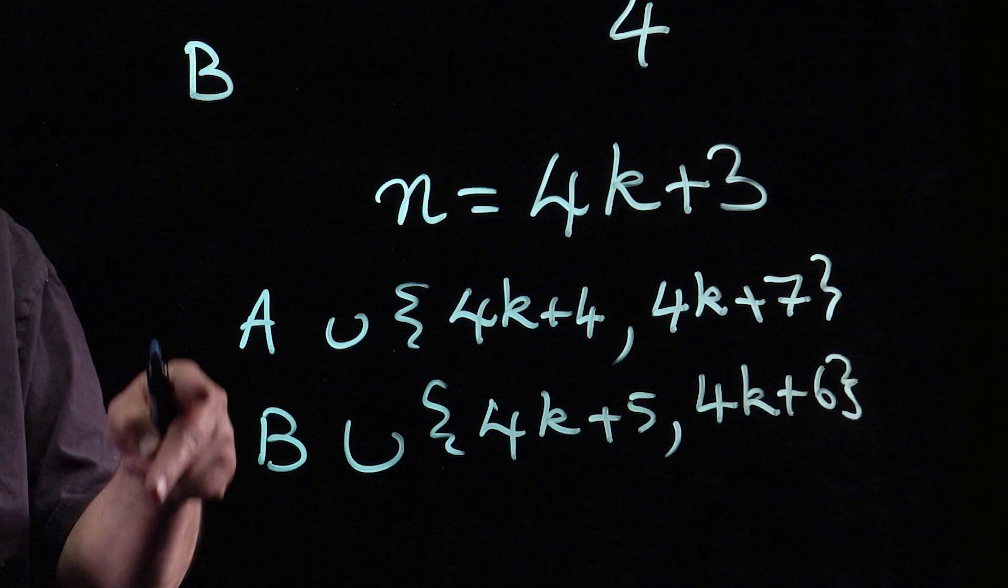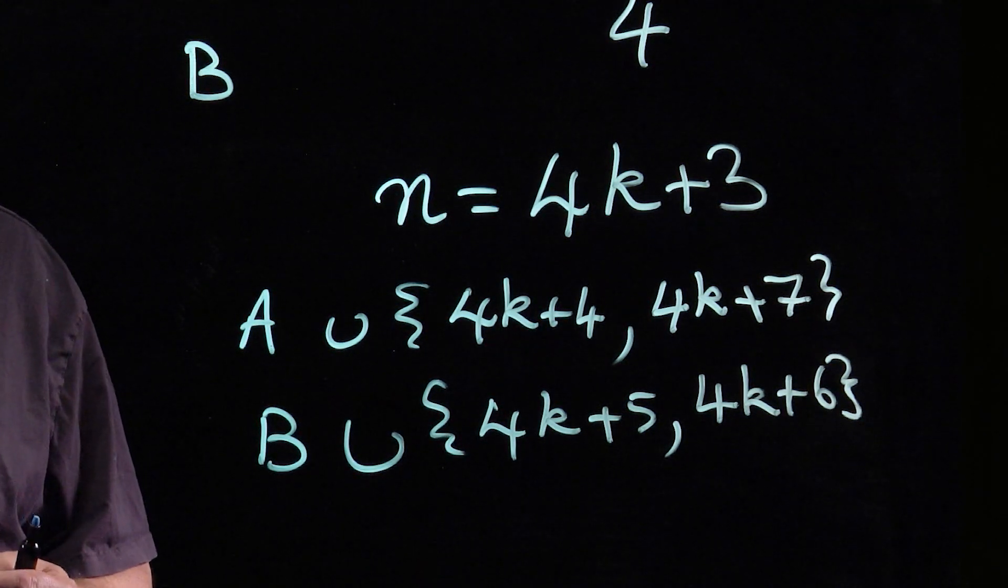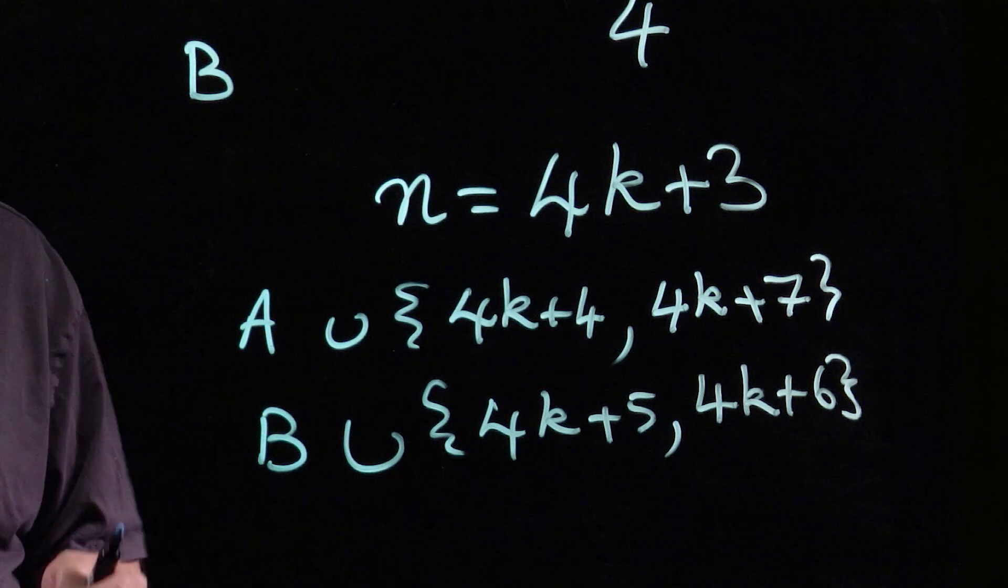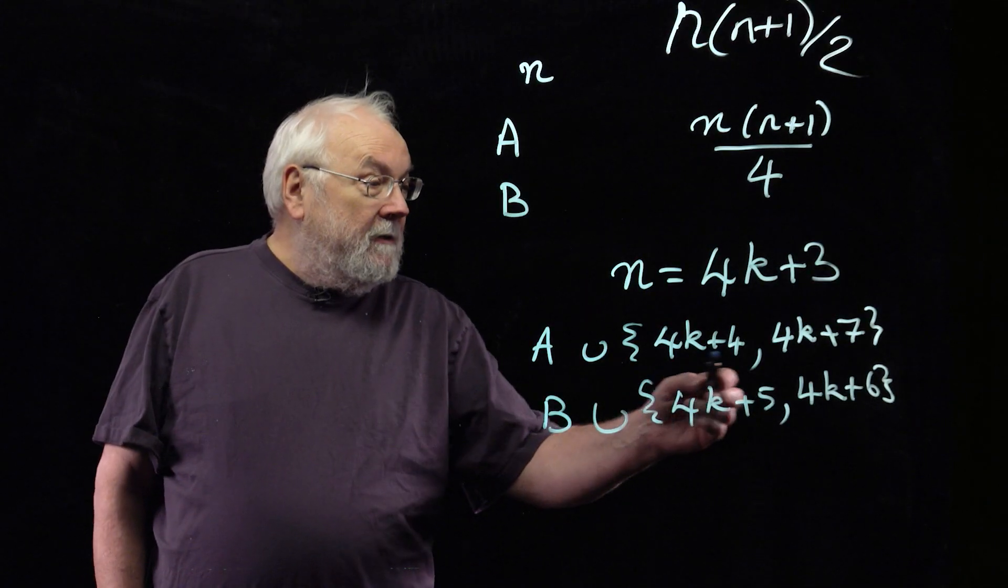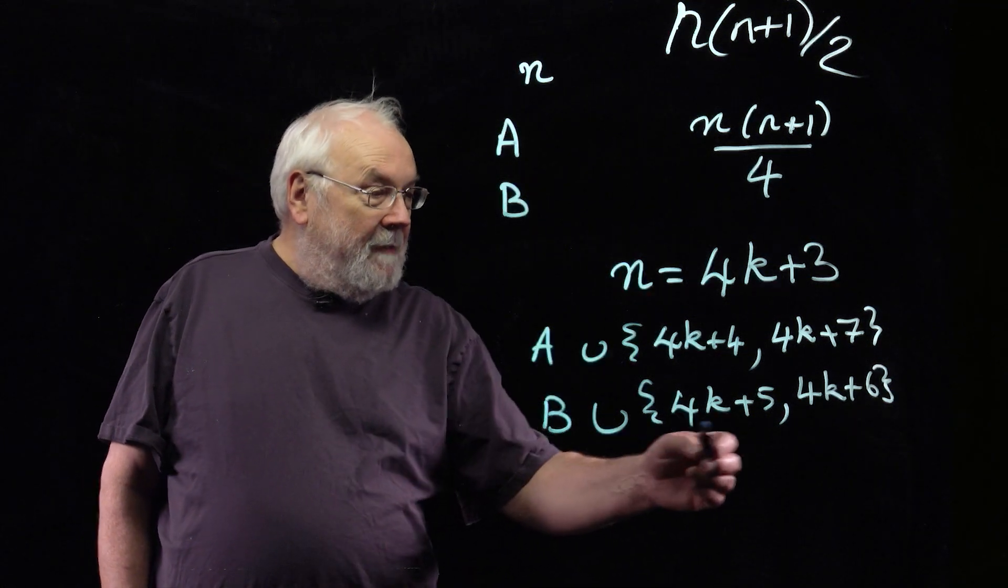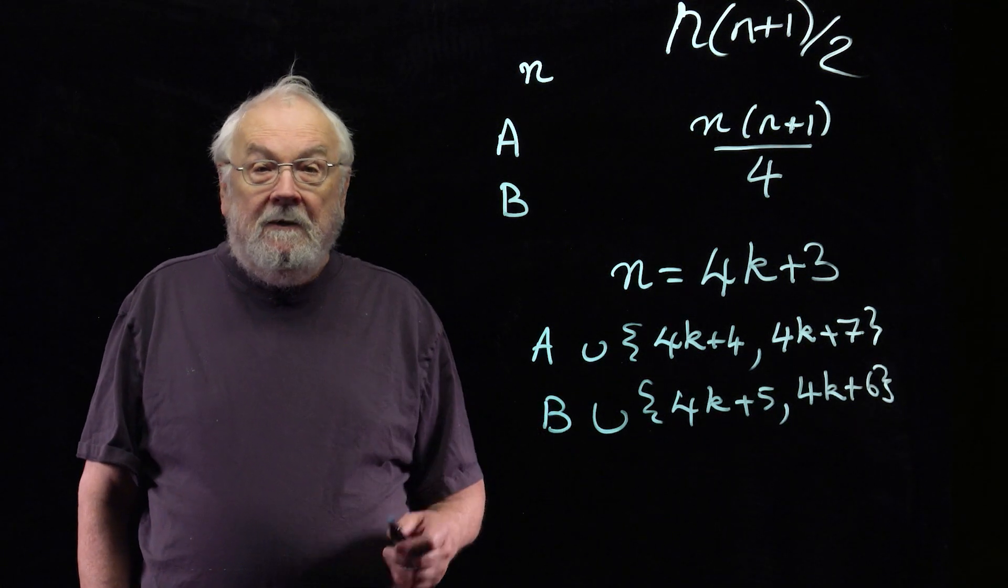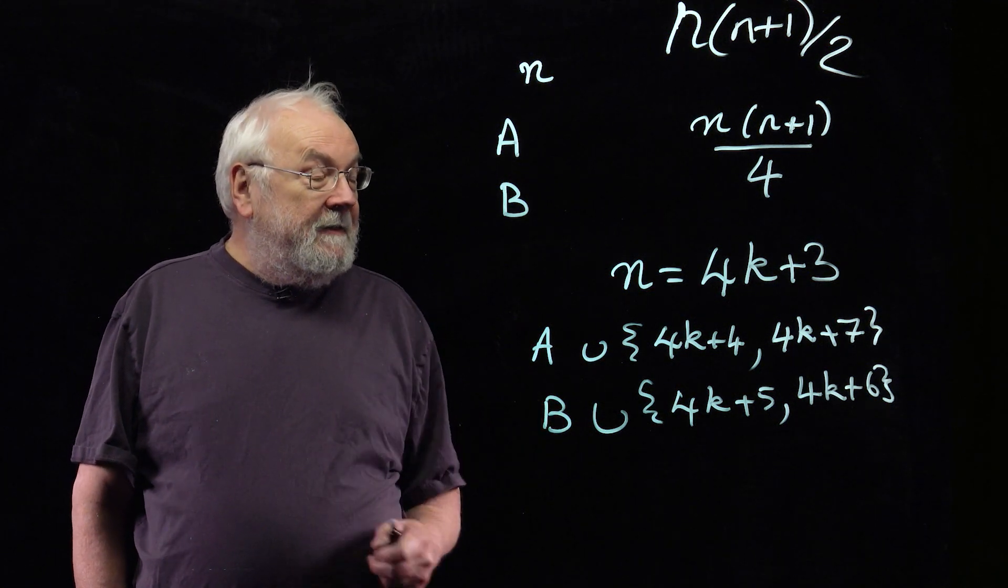So the sets A and B have almost the same size. You've added two extra numbers to each, so the resulting sets have almost the same size. And the total of these two numbers, 8k+11, is the same as the total of those two numbers. So you've produced a larger example, and you can do that indefinitely.